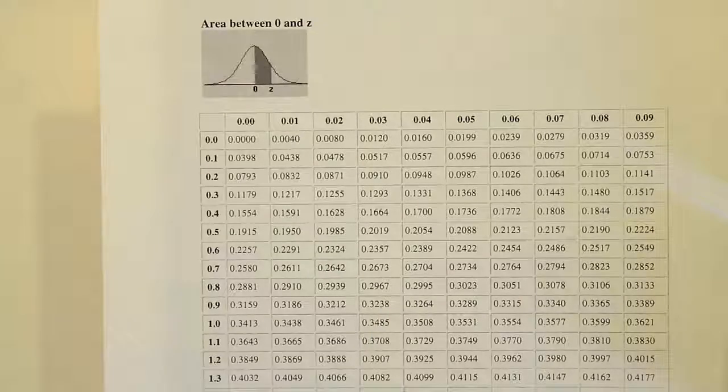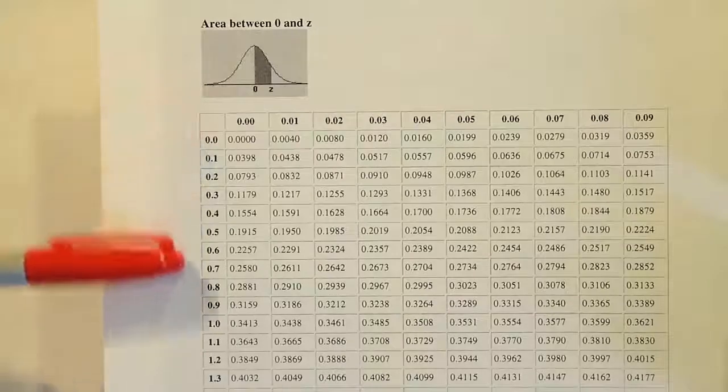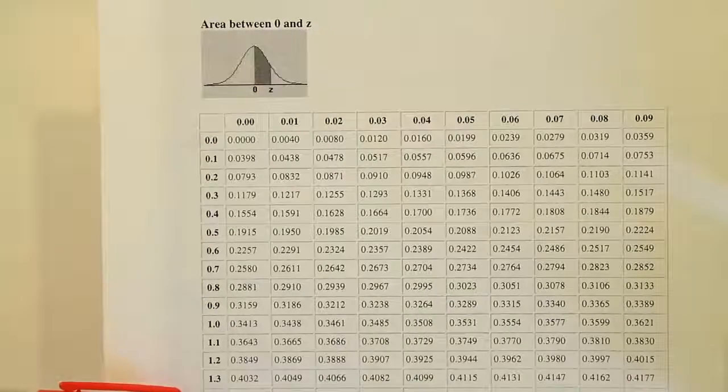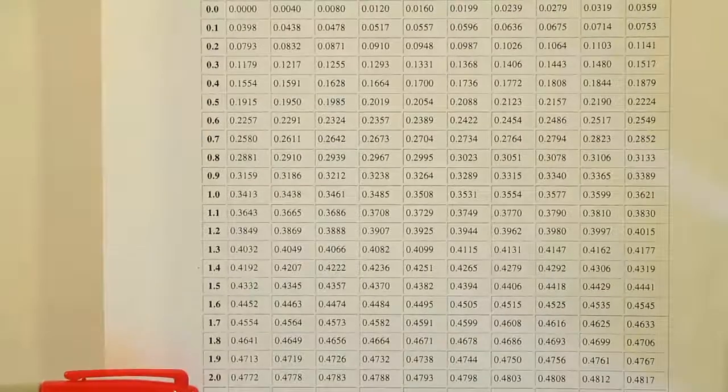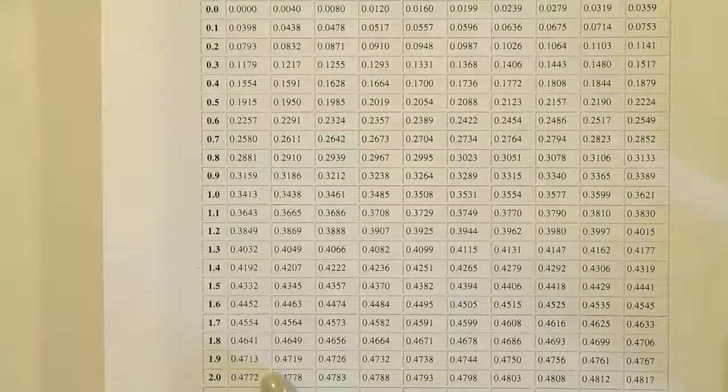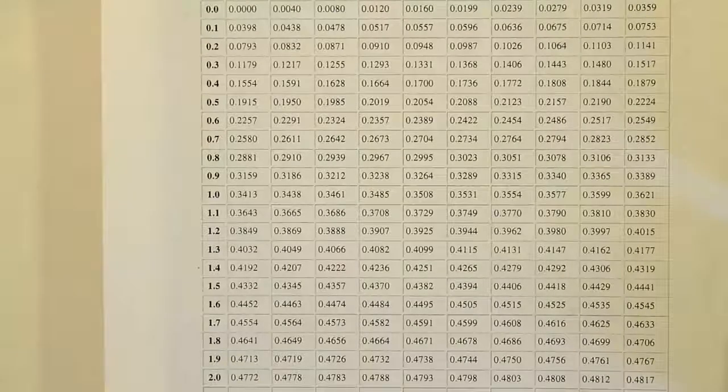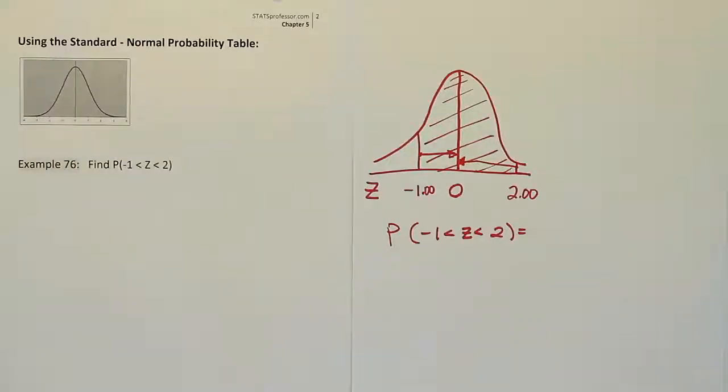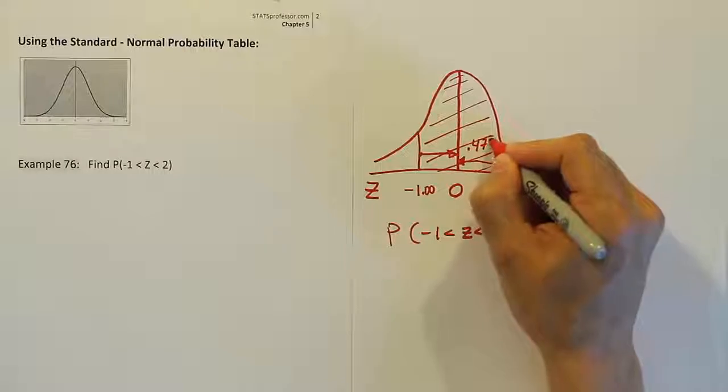Okay, so we have to look up the 2.00 first. We're going to need to move the table down so we can find the 2.0 in this first column here. So there we see 2.0 at the bottom of our table and 2.00 is the first value. Next to that, we get .4772. So after looking up 2.00, we got .4772.